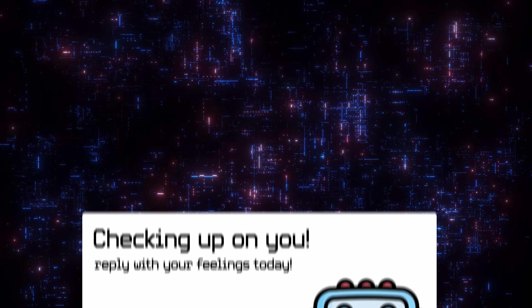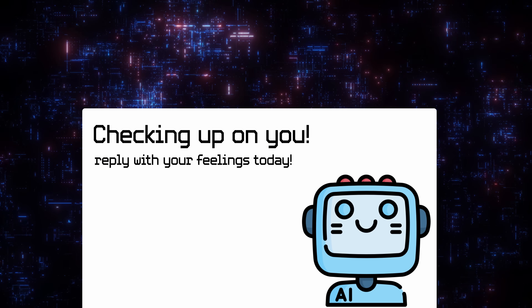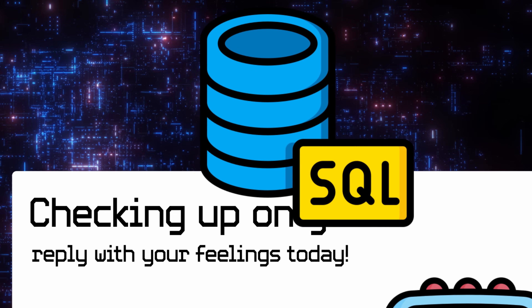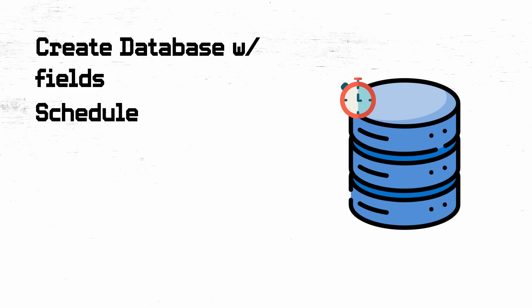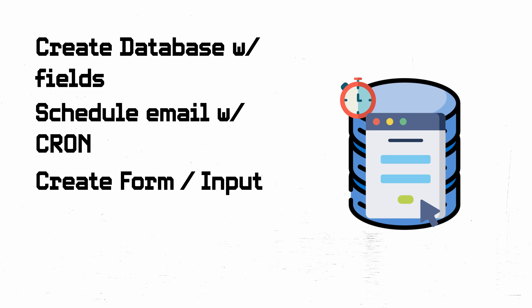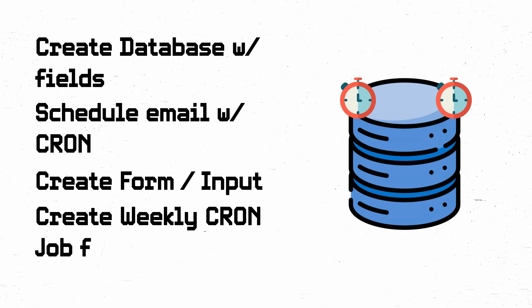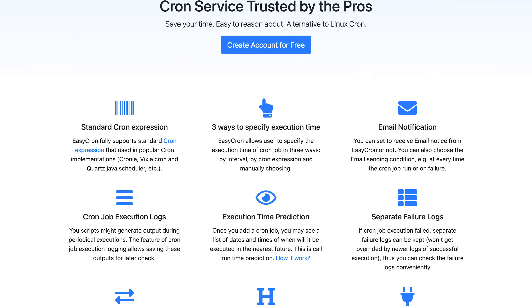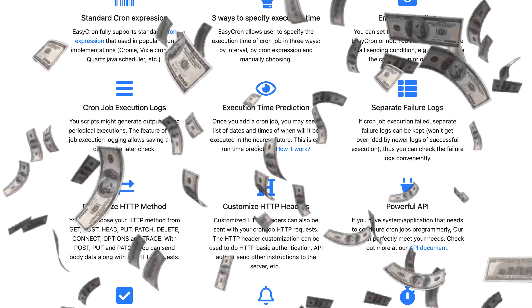Daily journal emailer. Imagine if you had an app that could track your mood, your feelings, how you're feeling that day. A daily journal emailer could email you at the same time every day asking you to insert how you're feeling. It can then store it in a database and maybe give you reports every week. Breakdown: create a database with fields you want to track, schedule an email with Cron to email you every day at the same time, create a form that allows users to track their moods, create another Cron job that calculates the last week and sends a weekly report. There are also services online to help you schedule tasks, but you'll probably have to pay for that.